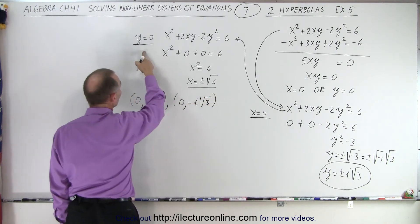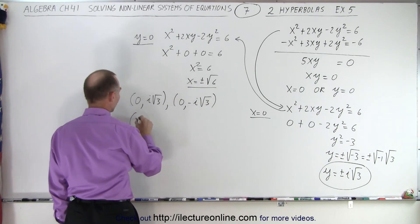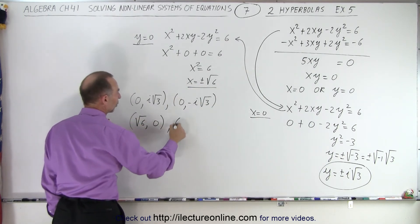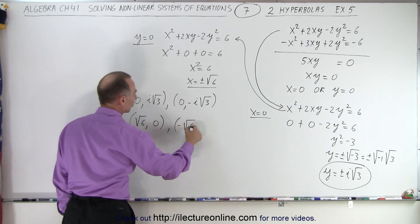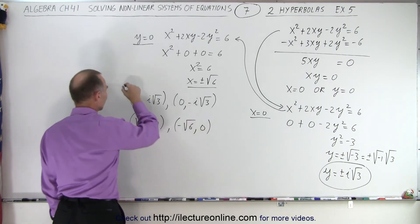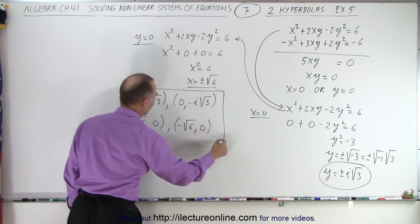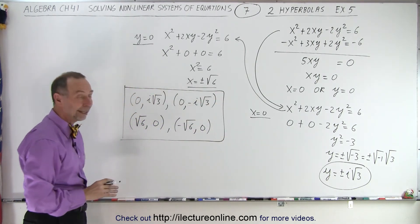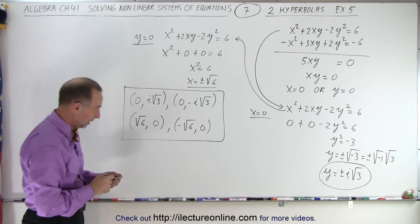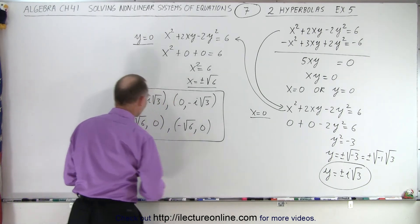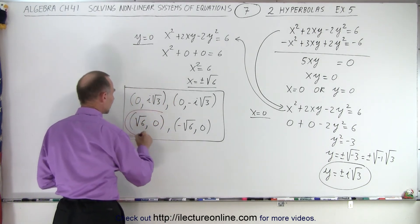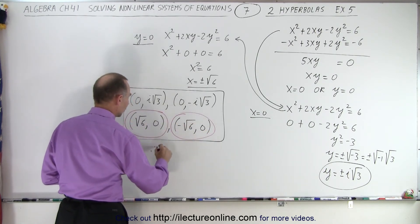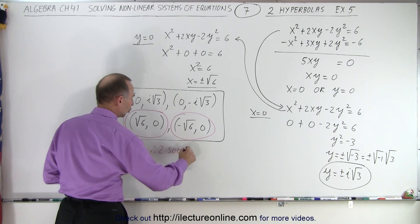And then when y is equal to 0, we end up with the square root of 6 and y equals 0. Or negative the square root of 6 and y equals 0. And those are the four possible solutions. Now of course, only two of them are real and the other two are imaginary. Which means the only two real solutions I have is this right here and this right here. So therefore we can conclude there's only two solutions.